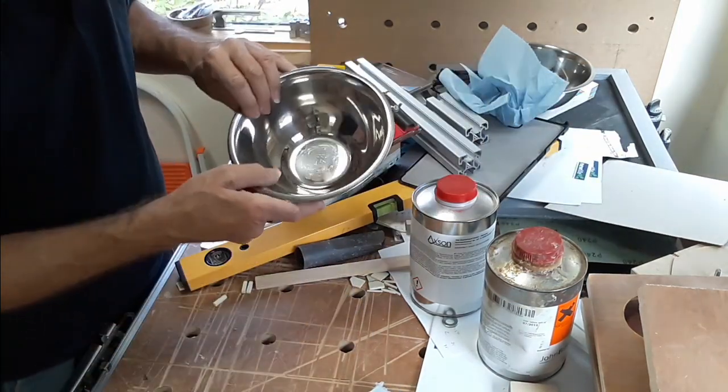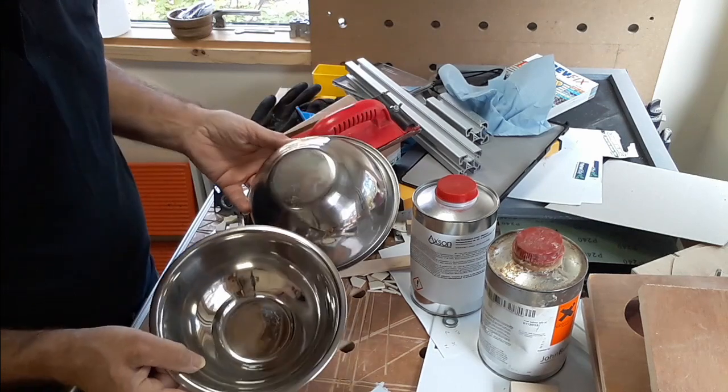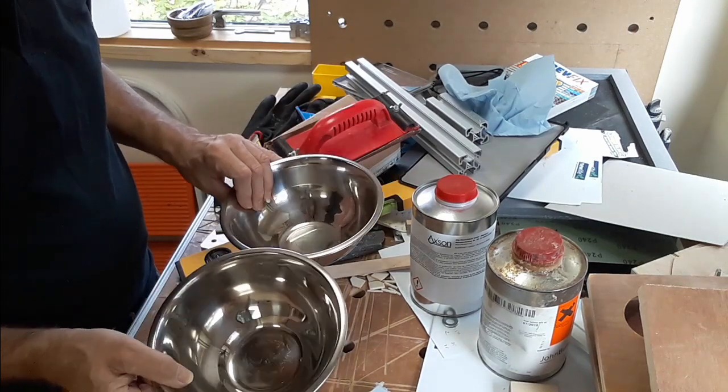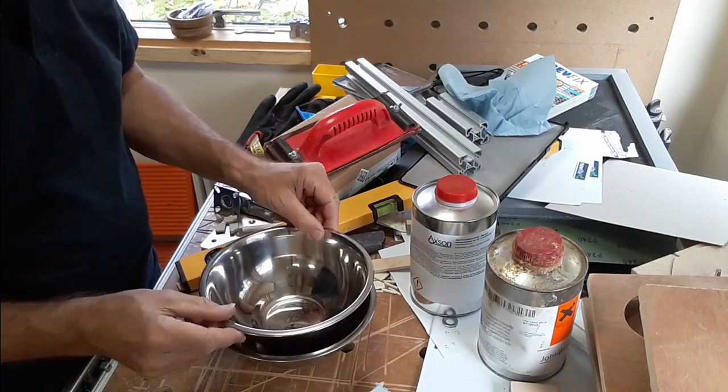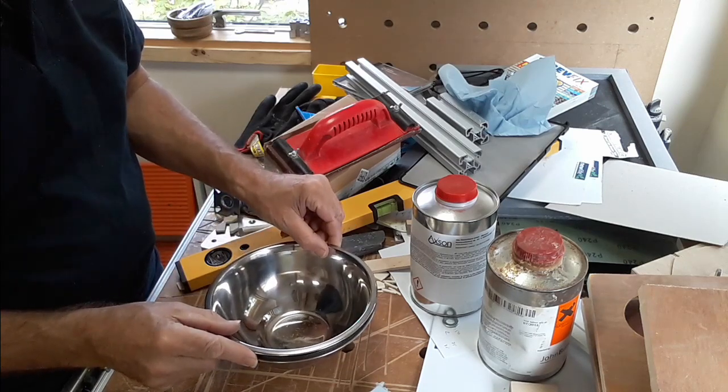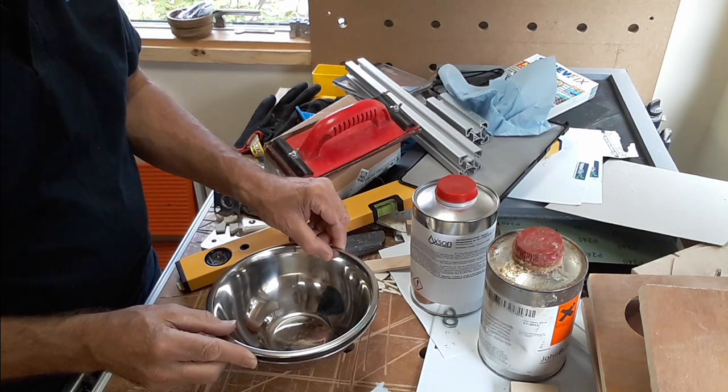But I had a couple of bowls that I'd got from Poundland for a pound a piece. So that was probably the best thing to use, just sandwich them slightly apart with the resin between, and it should give me an inner and an outer.